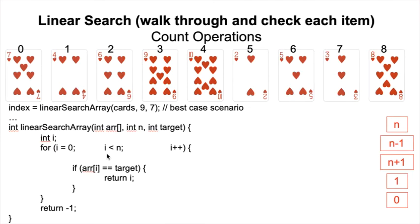So we're going to go through this algorithm and count all the operations — and I mean we're going to count everything. We're even going to count this 'int i' here, which is just a variable declaration. Some people might not count it, but I'm just going to be really verbose and count everything. So 'int i' — this is going to occur no matter what. It's not part of the loop. It always occurs once.